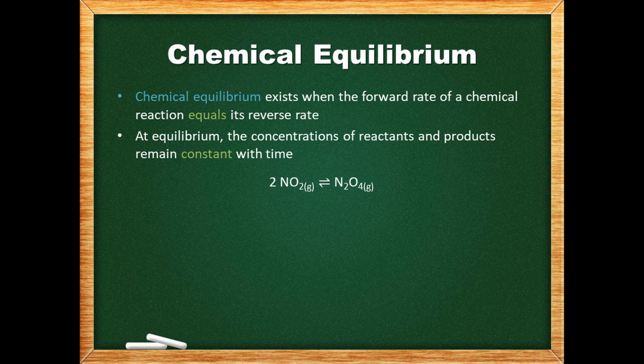Chemical equilibria are dynamic, meaning that they are active. Each reactant is being put back by the reverse reaction at the same rate that it is being used up by the forward reaction, and vice versa for each product. This is why the concentrations of reactants and products remain constant with time.